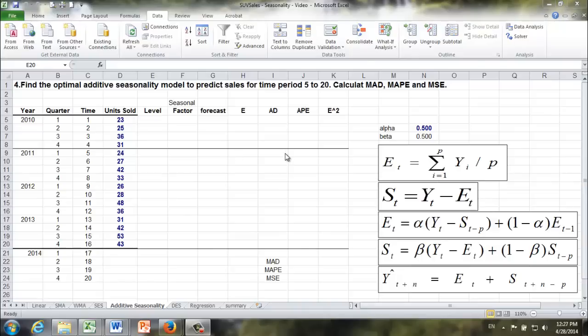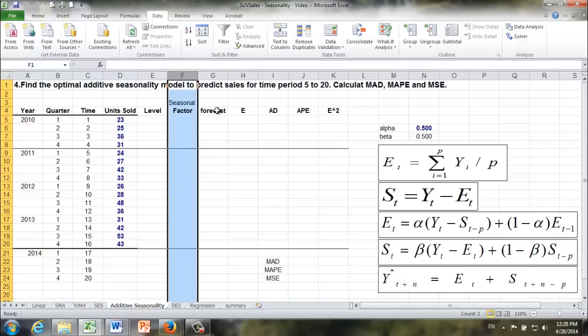Here we have a list of five formulas. Let's see how these formulas work. First of all, some notations. E means level, sometimes people call that base level, they are in our column E. And S is called seasonal factor, they are in our column F.